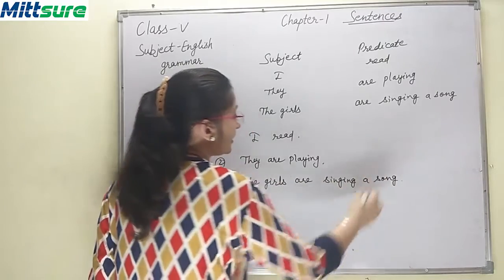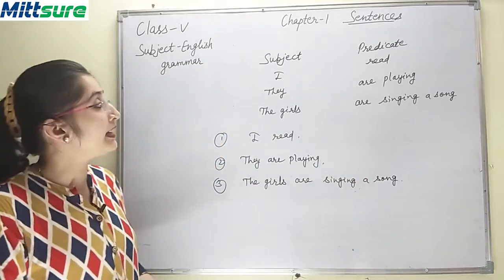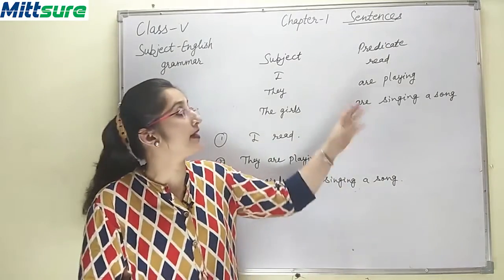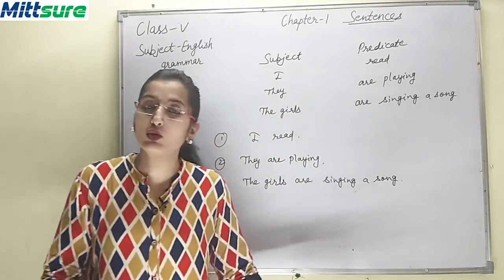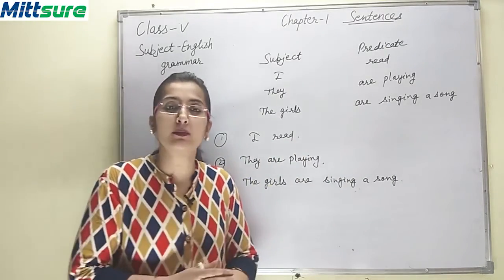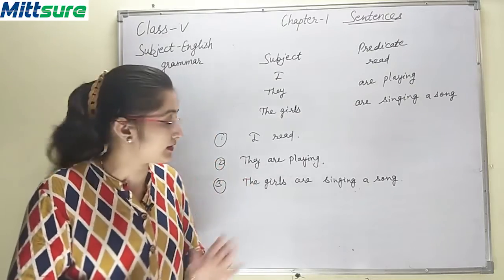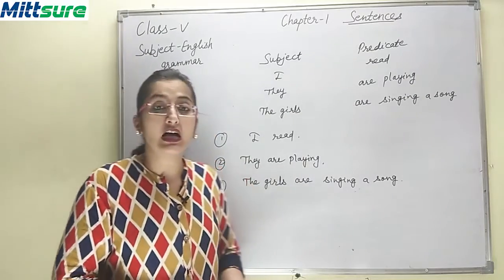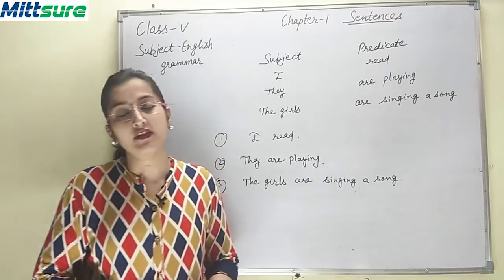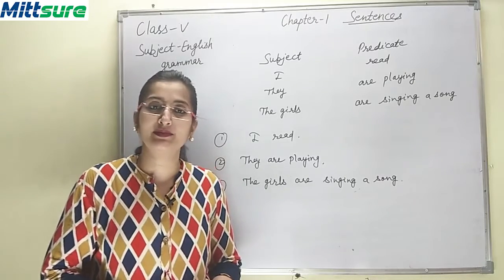So we have seen that the subject alone cannot tell us the complete meaning, and the predicate alone also cannot tell us. We need both of them to make a complete sentence. In the next session we will study the types of sentences. Thank you.